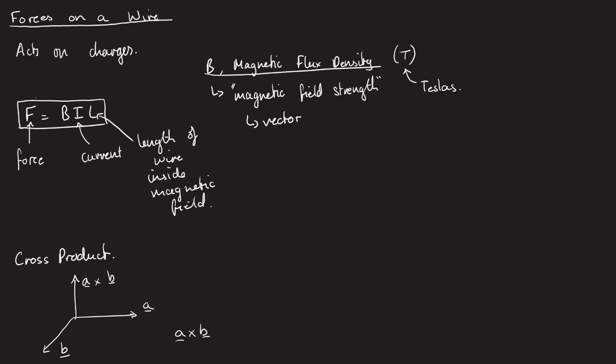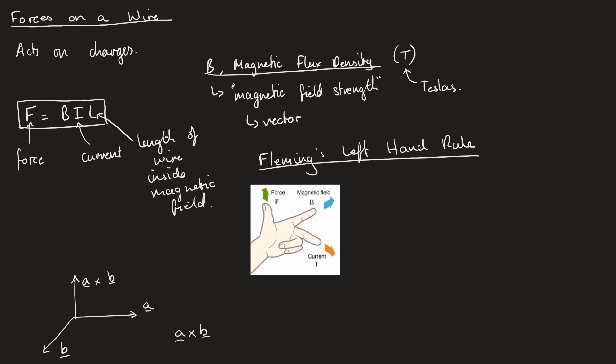To understand which direction the force acts in, we say this makes a left-handed system, and so we can apply something called Fleming's left-hand rule. To visualize what to do with Fleming's left-hand rule, we have a diagram that represents which directions the force, the magnetic field, and the current are going to flow in. We get this thing we usually call an FBI gun - the force here, the magnetic field here, and the current here - and this is a left-handed system.